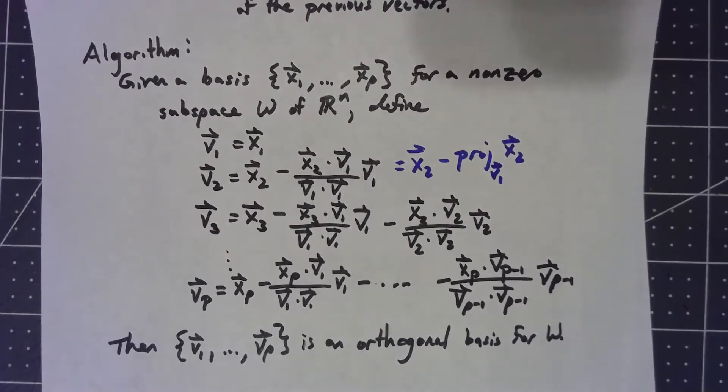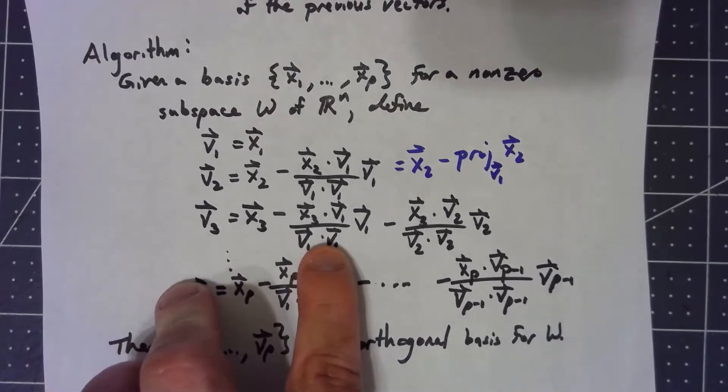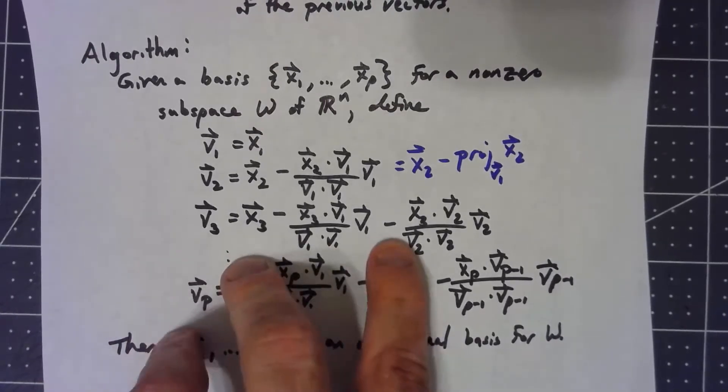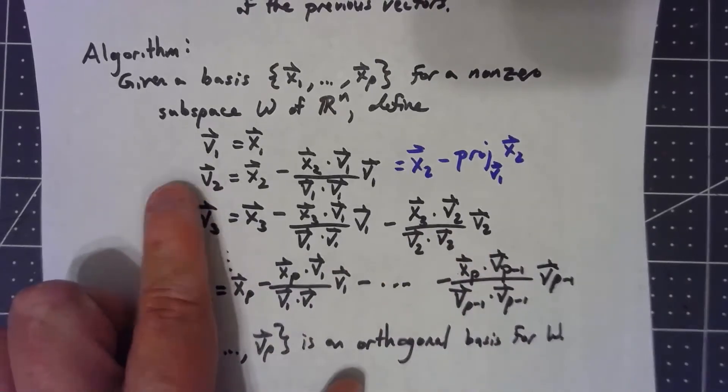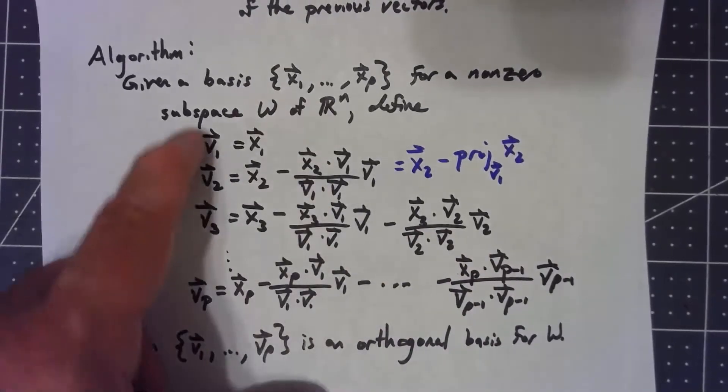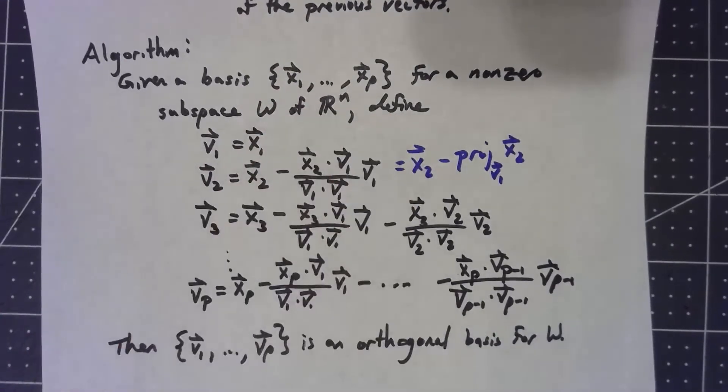Similarly, this next one is x3 minus the projection of x3 onto v1 minus the projection of x3 onto v2. Now it is important that we use v2 and not x2. We have to use the orthogonal vectors to project onto, not the original basis vectors.